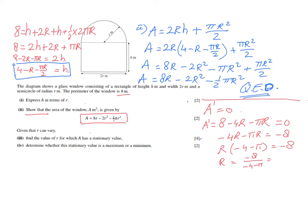Calculating: r = 8/(4 + π). Plugging into a calculator gives r ≈ 1.12, correct to three significant figures. So when r = 1.12, the area has a stationary value, meaning the derivative (gradient) is zero at that point.